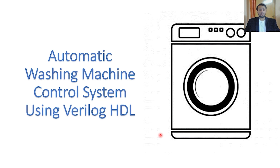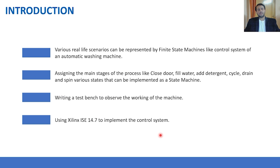Hello guys, welcome to the channel. We are back again with another project. This time we will be implementing the control system of an automatic washing machine using Verilog HDL. The various realized scenarios can be represented by finite state machines, where the procedure can be broken into different steps or states, and the transitions among these states are defined by the change of a particular parameter.